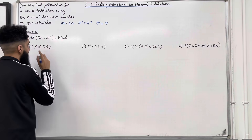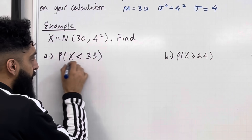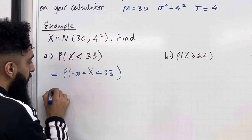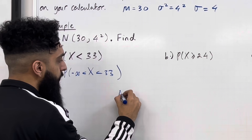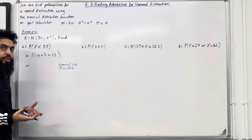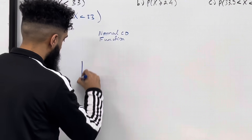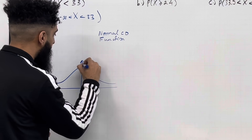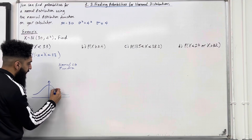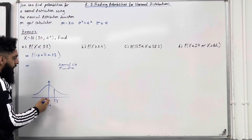Find part A: probability X is less than 33. The first step is to rewrite this probability using negative infinity. So we have that this probability is equal to the probability of X being less than 33 but greater than negative infinity. We'll calculate this using the normal CD function. Before that, I'm going to illustrate this probability on a bell-shaped curve, centred at the mean mu, which is 30. 33 is more than 30, so we can position 33 to the right. Probability X is less than 33 represents the shading to the left of 33.